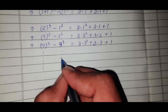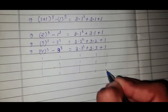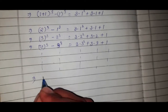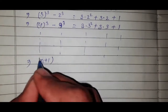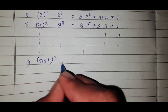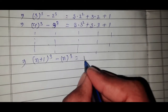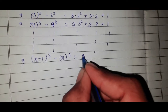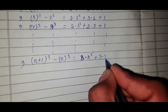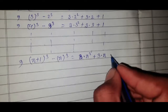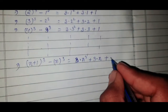We write all terms up to n. The general n-th term: (n+1)³ - n³ = 3n² + 3n + 1. We continue writing dot dot dot up to the n-th term.